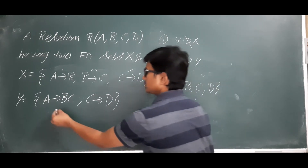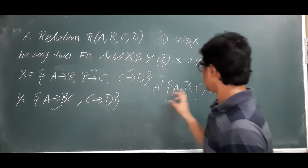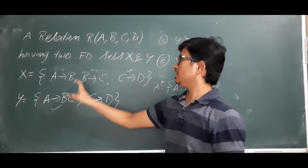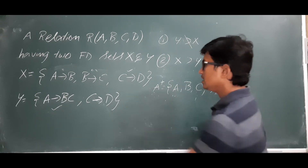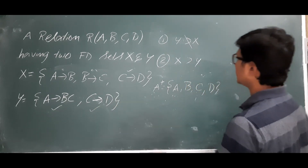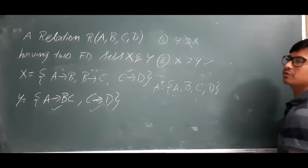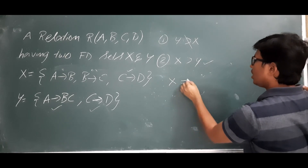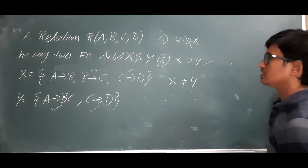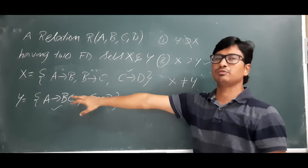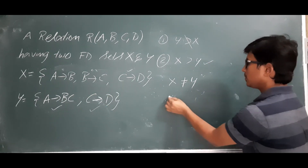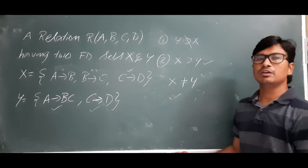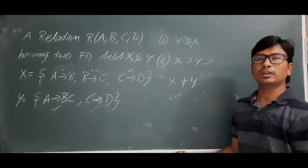A+ from X consists of b and c, so A→BC is indirectly present in X. C→D is directly present. So X covers Y. But since Y does not cover X, X is not equivalent to Y — the two FD sets X and Y are not equal. I hope you have understood how to check whether two sets of FDs are equivalent or not. Thank you.